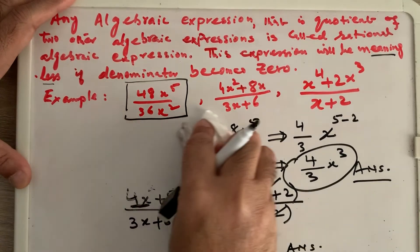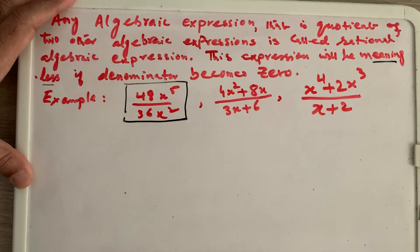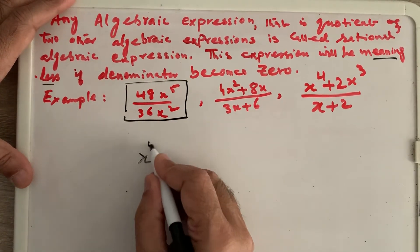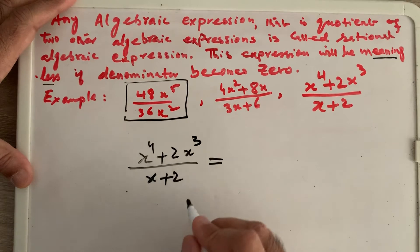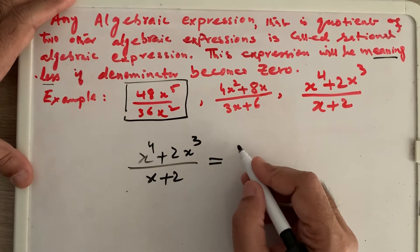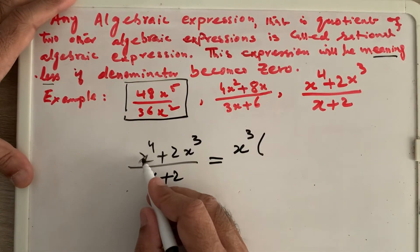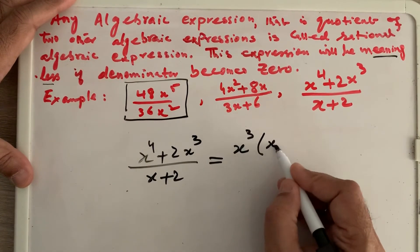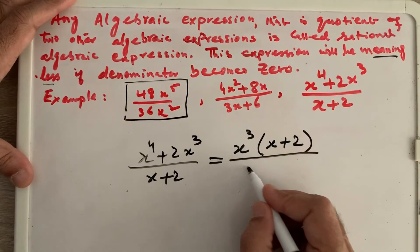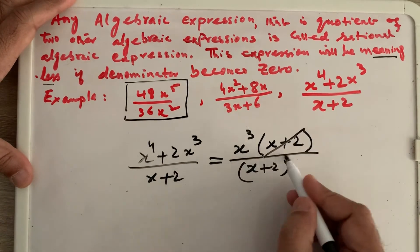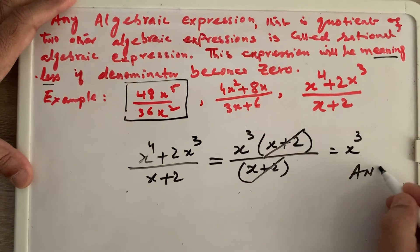For the third example, (x⁴ + 2x³) divided by (x + 2): we can take out x cubed from the numerator — x⁴ gives 1x left, and 2x³ gives 2 left — so the numerator becomes x³ times (x + 2). Divided by (x + 2), the (x + 2) terms cancel, and we are left with x cubed as the answer.